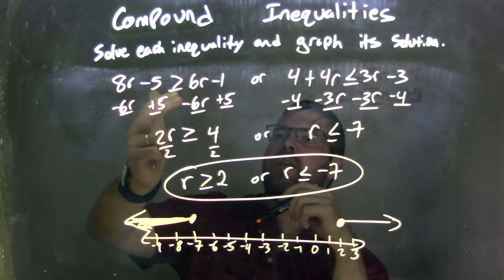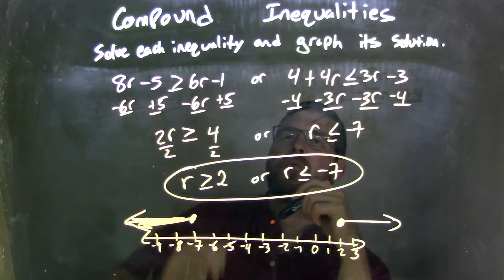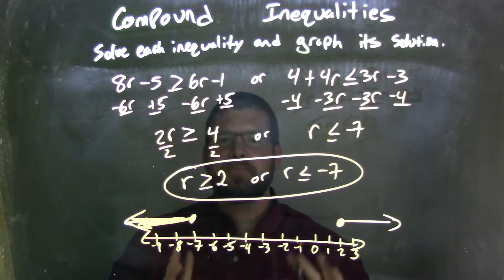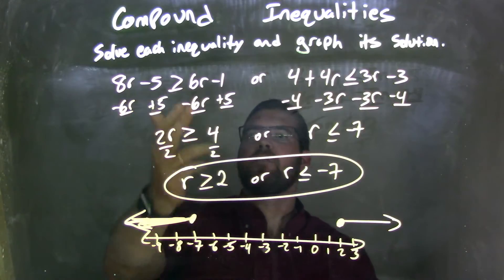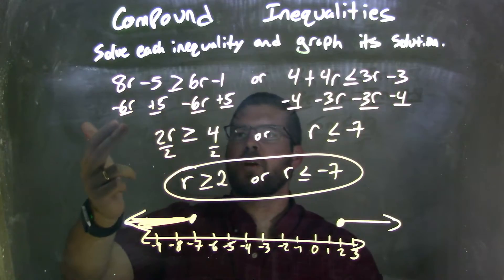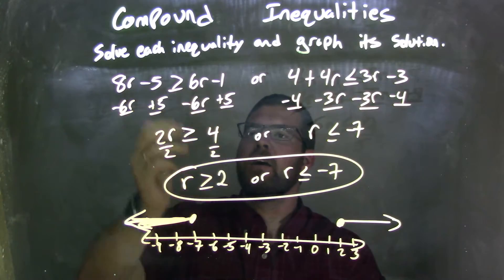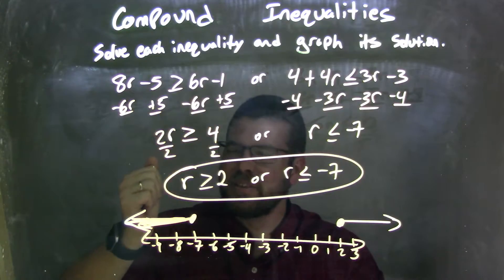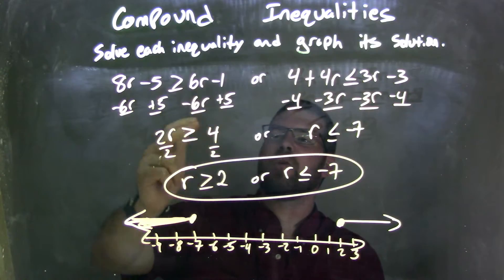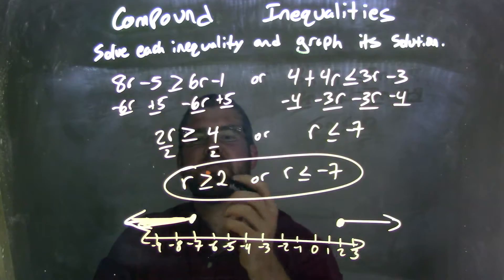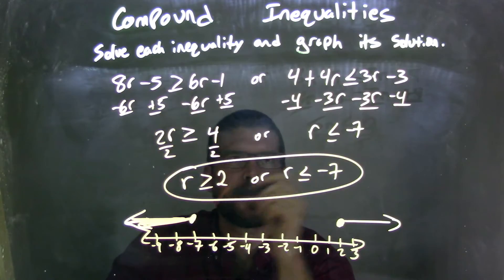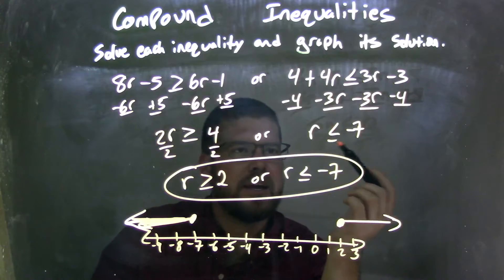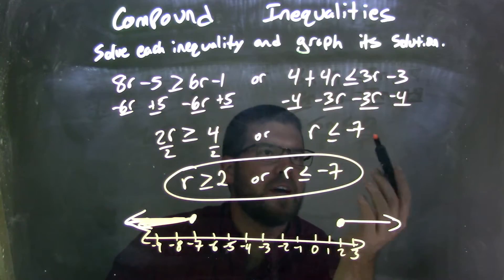So as a recap, we were given 8r minus 5 is greater than or equal to 6r minus 1, or 4 plus 4r is less than or equal to 3r minus 3. I solved each individually: subtracting 6r from both sides and adding 5 to both sides gave me 2r is greater than or equal to 4. Dividing by 2 gave me r is greater than or equal to 2. For the second, bringing the r to the left and numbers to the right gave me r is less than or equal to negative 7.